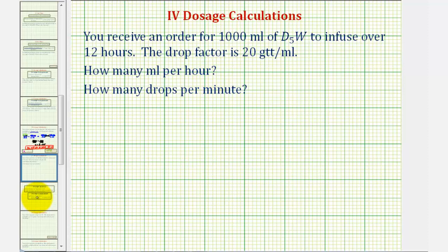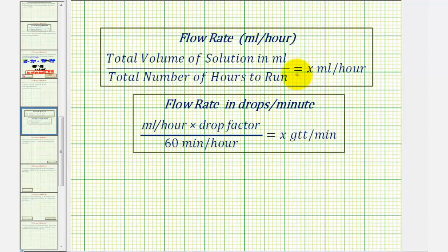So for a quick review, to determine the flow rate in milliliters per hour, we take the total volume of the solution in milliliters and divide by the total number of hours to run. Once we find this flow rate, we can then find the drops per minute by taking the flow rate in milliliters per hour, multiplying by the drop factor and then dividing by 60 milliliters per hour.